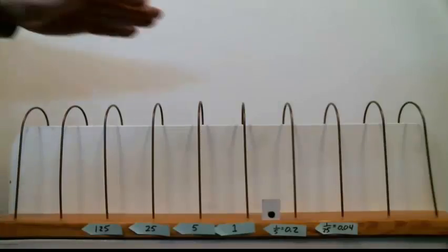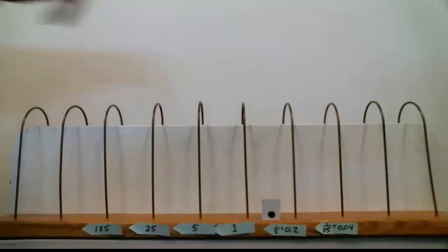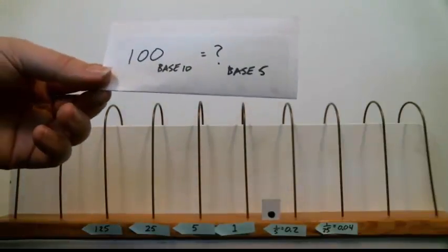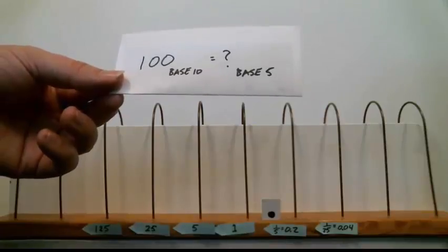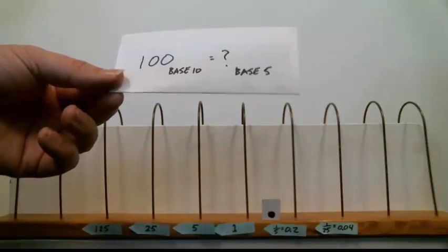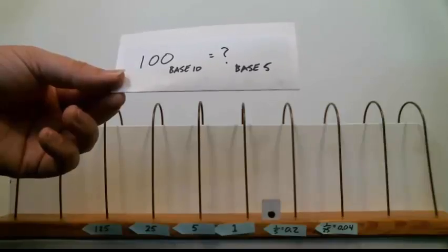Let's do something a little more complicated with our base 5 vertical abacus. I want to convert the other direction this time. I want to convert a base 10 number into base 5. So I want to convert the base 10 number 100, which I can use that word because it's base 10, into base 5. How do I do that?